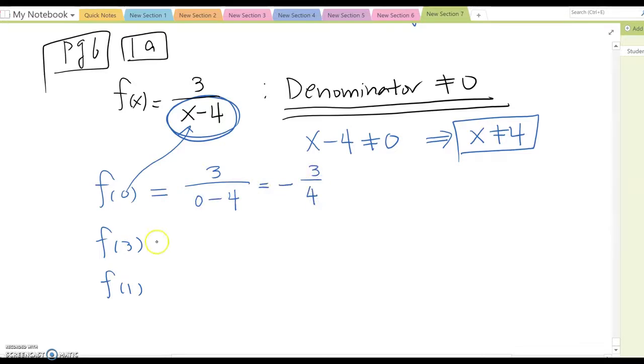The same thing here. This becomes 3 over 3 minus 4, which means 3 over negative 1, so becomes negative 3. This one, 3 over 1 minus 4, so 3 over negative 3, so becomes negative 1 like that.